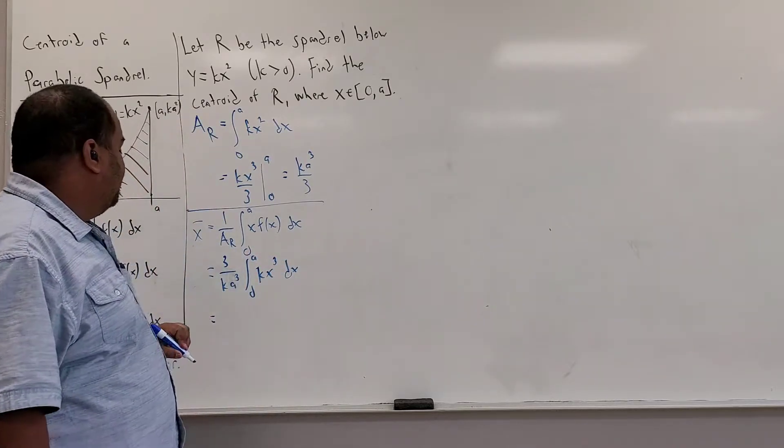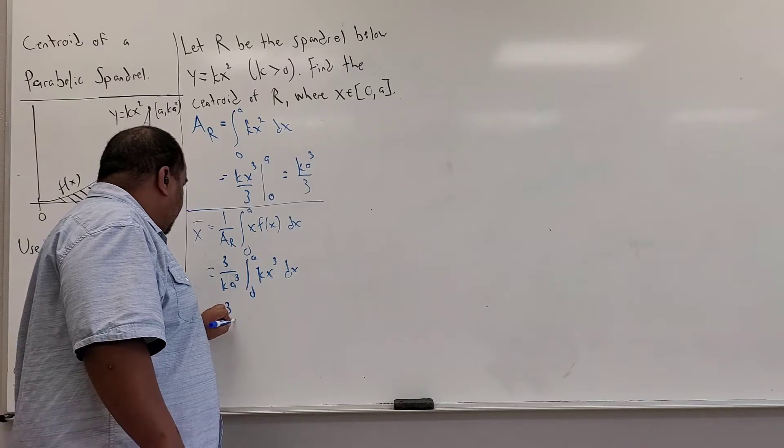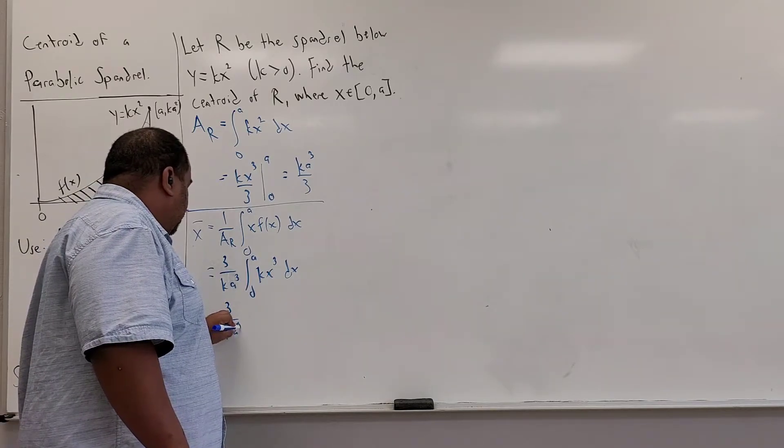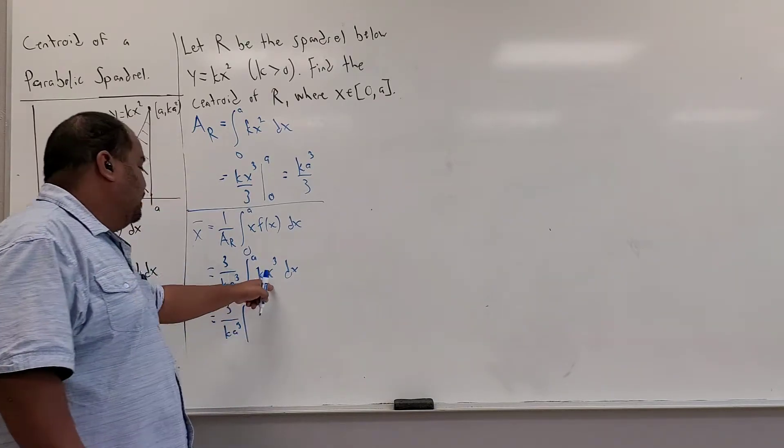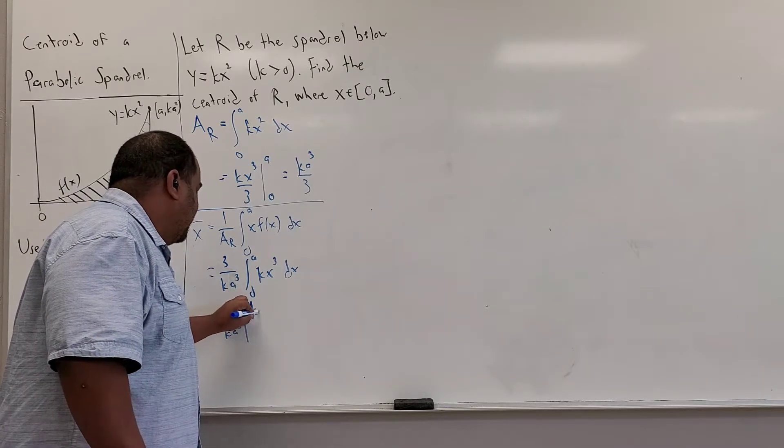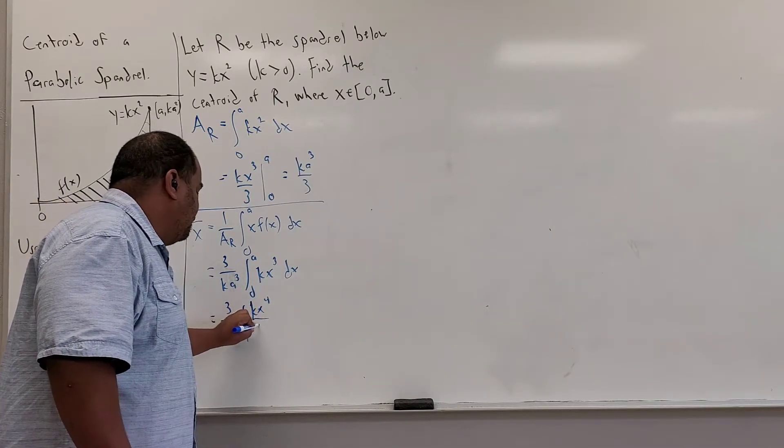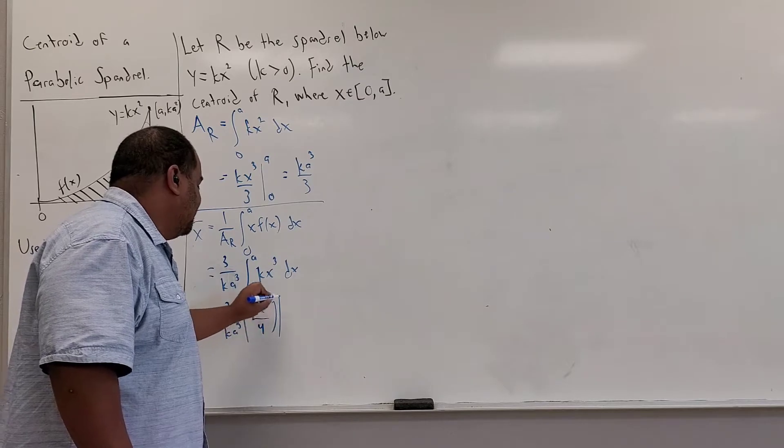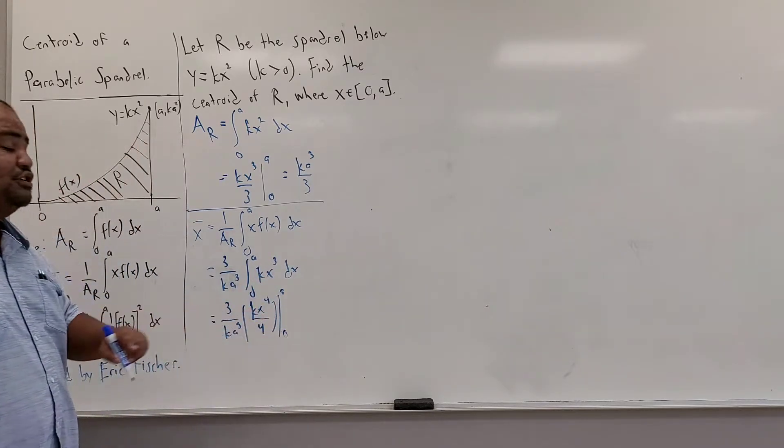Again, more application of the power rule. 3 over k a cubed times the antiderivative here, k x to the fourth over 4. Evaluating this between a and 0, again it vanishes at 0.